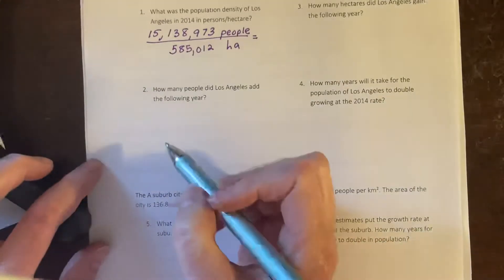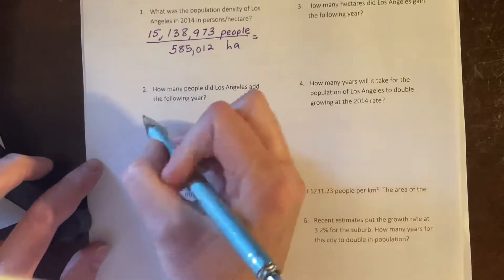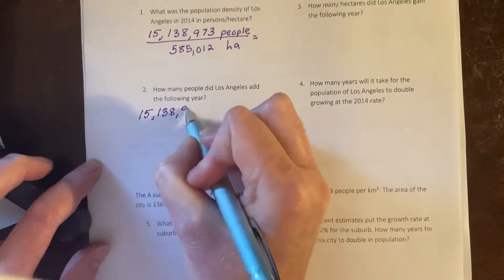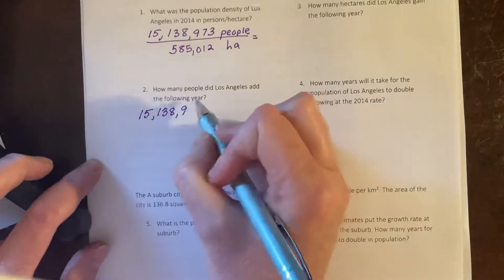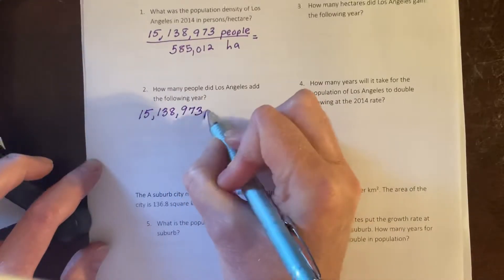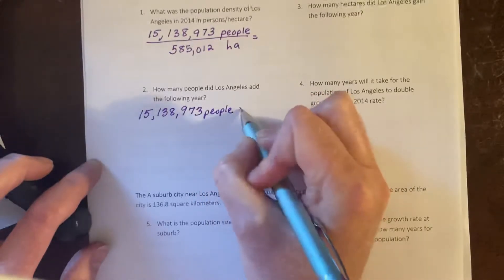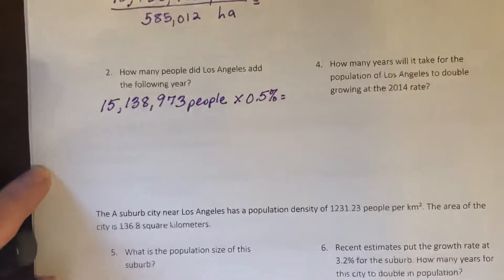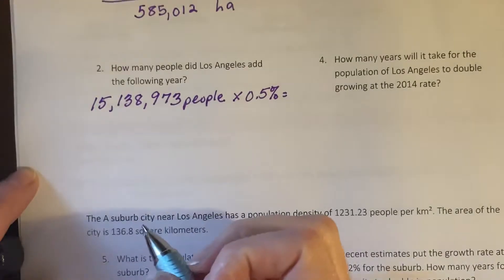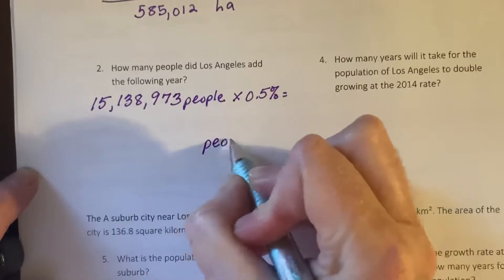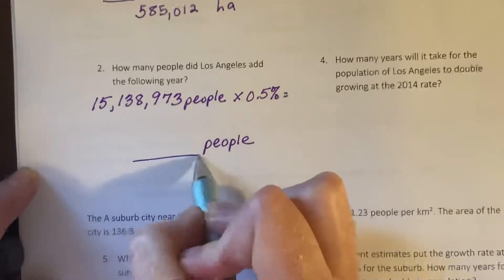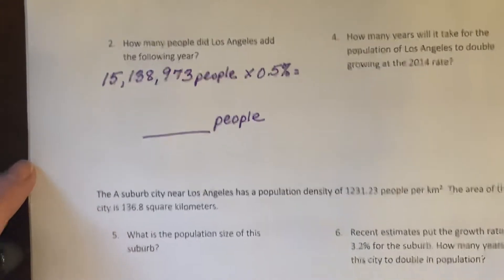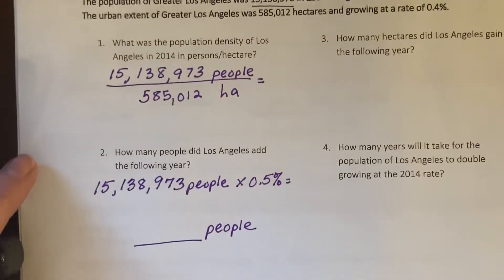How many people did Los Angeles add the following year? It's growing at a rate of 0.5%. So you multiply 15,138,973 people times 0.5%. Always set up your work — even if you can do it in your head, you have to set up your work. Your answer comes out in people. You can round to three significant figures or, what makes more sense here, round to a whole number of people.